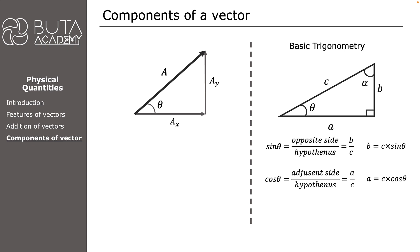Now we can switch back to components of vectors and use the trigonometric equations to calculate the magnitudes of AX and AY. AY is opposite to angle theta, so its magnitude will be equal to the hypotenuse — which is the magnitude of vector A — multiplied by sine theta. AX is adjacent to angle theta, so its magnitude will be equal to A times cosine theta.